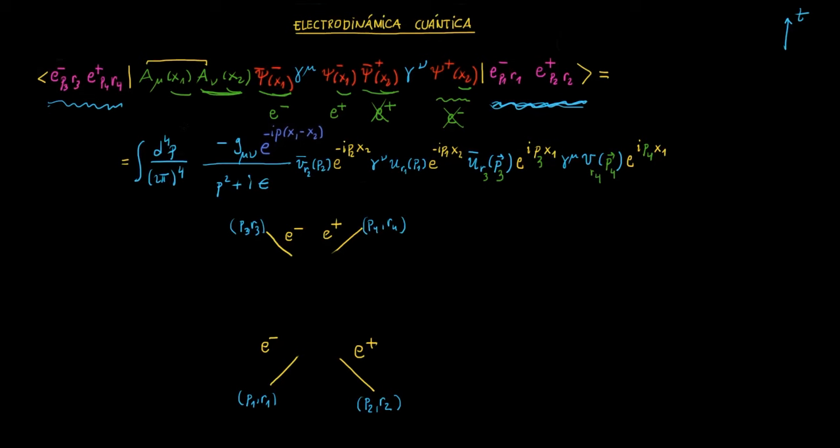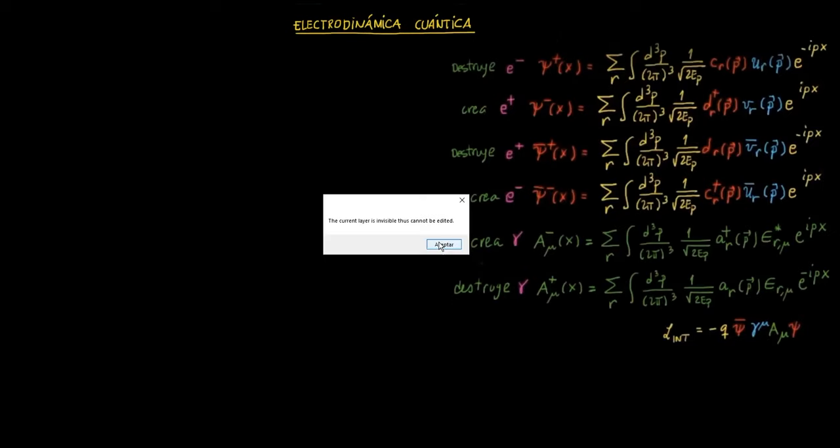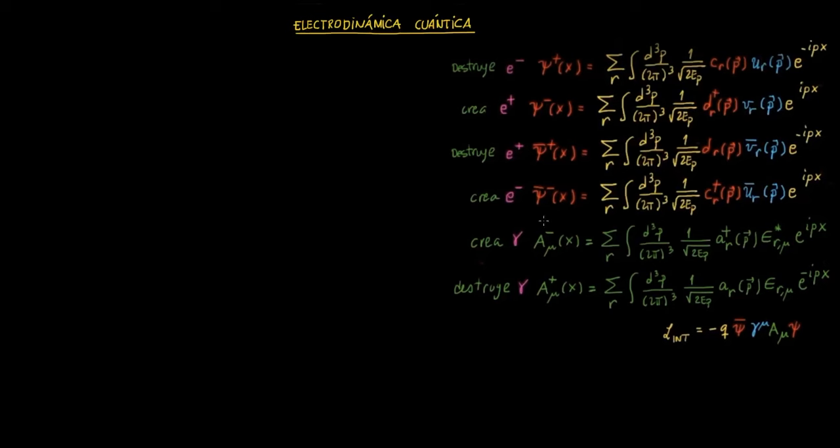Y propagador quiere decir, con la nomenclatura que hemos estado explicando en los capítulos anteriores, propagador quiere decir que se va a crear un electrón aquí, y por tanto ponemos el campo a menos. Campo, perdón, aquí, campo a menos. Y se destruye el fotón con el campo a más en el punto x1. Vale, pues entonces, ¿qué vemos? Que en el punto x2 del espacio-tiempo, lo que se hace es crear un fotón, y en el punto x1 se destruye ese fotón.